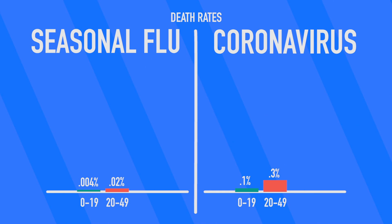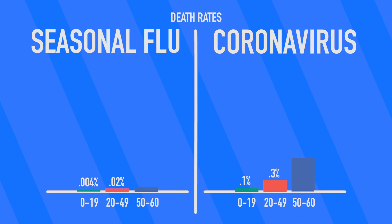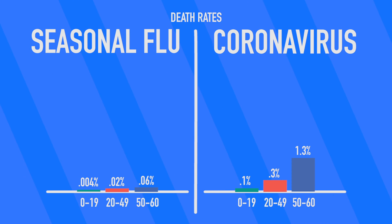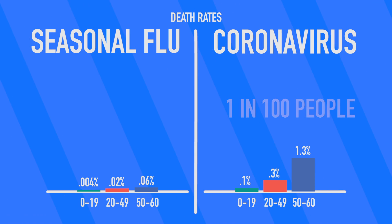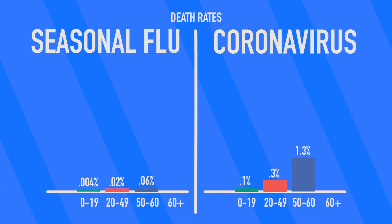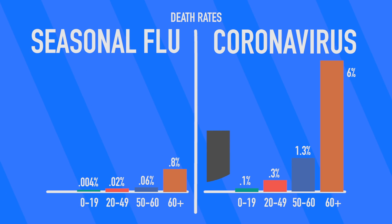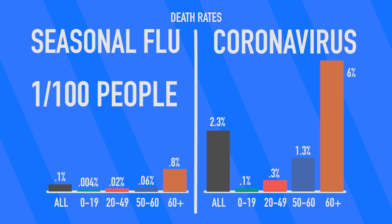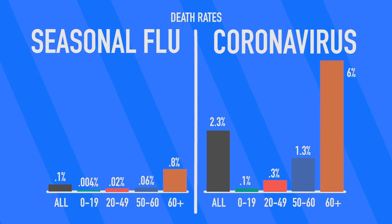Quantifying this, it means that 3 in every 1,000 people aged 20 to 49 infected with COVID-19 will unfortunately pass away. Moving along to the next age bracket, 50 to 60, the death rates get worse. The seasonal flu has a death rate of 0.06% for this age group, whereas COVID-19 has a death rate of 1.3% — that's a little over 1 in every 100 people aged 50 to 60 who get COVID-19, compared to just barely 1 in every 1,000 with the seasonal flu. Finally, looking at ages 60+, the outlook is more grim. The seasonal flu has a death rate of 0.8%, where COVID-19 has a death rate of 6% — meaning 6 out of every 100 people over 60 with COVID-19 will pass away, compared to 1 in 100 with the flu. That's 4 to 7 times as risky for this age group.